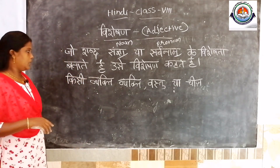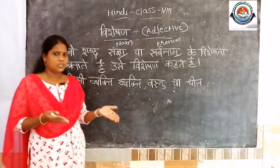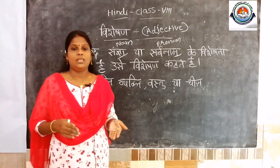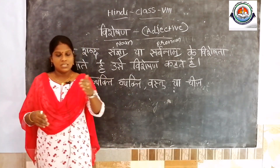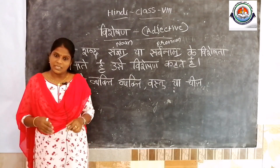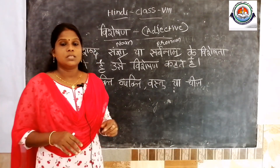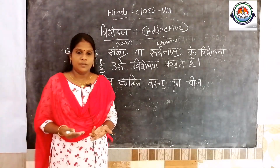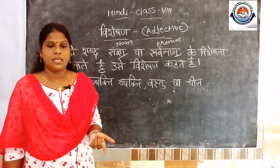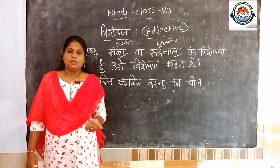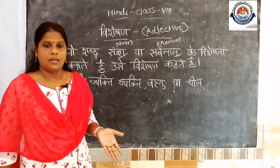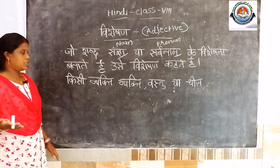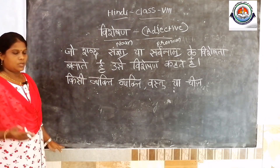In Hindi: sankhya ke baar baar prayog rokne ke liye, uske sthaan par prayog kiye gaye shabdon ko sarvanam kehte hain. Examples: vah, ye, ve, uske, etc. Understood, children?